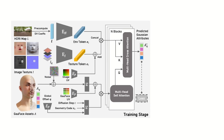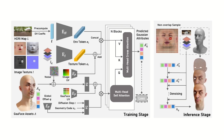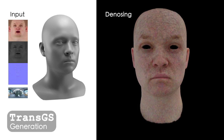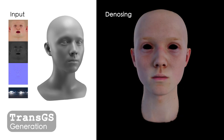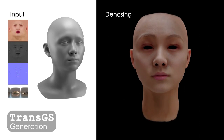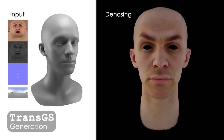We propose a patch-based generation pipeline with UV positional encoding to effectively handle the vast number of Gaussian points. Conditioning on geometry, PBR texture, and lighting, TransGS can generate GAUFACE assets.